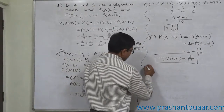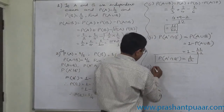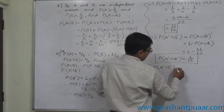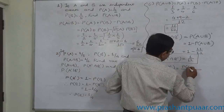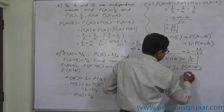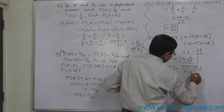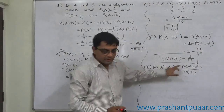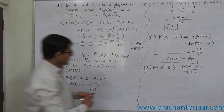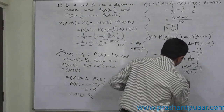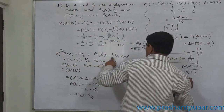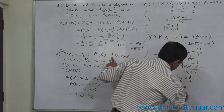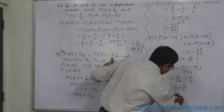The third part is the conditional probability P(A'|B'). The formula is P(A'∩B') divided by P(B'). We have P(A'∩B') = 1/12 and P(B') = 1/4. So the answer is 1/12 divided by 1/4, which equals 1/12 times 4/1 = 1/3.